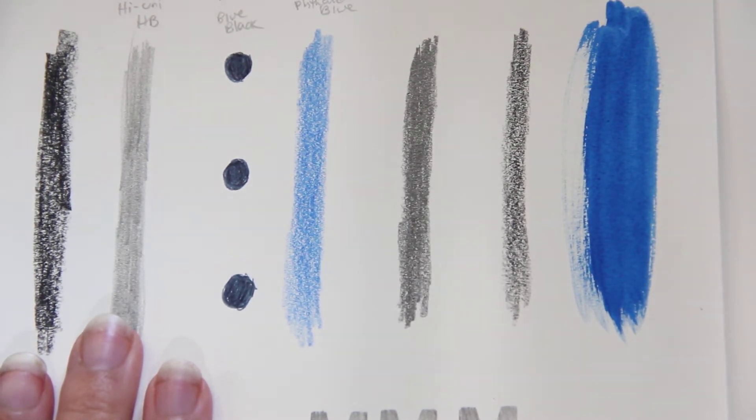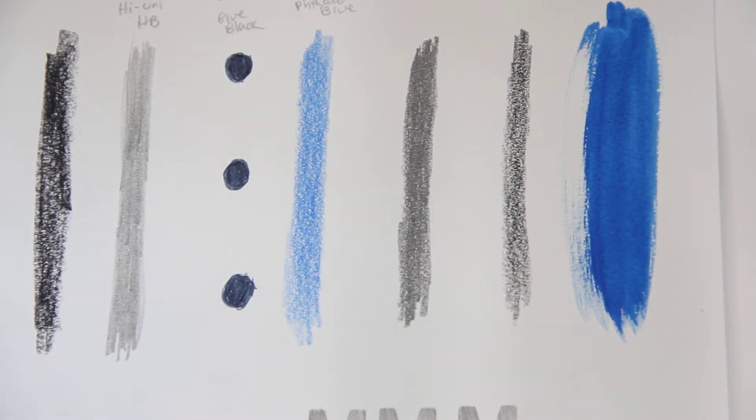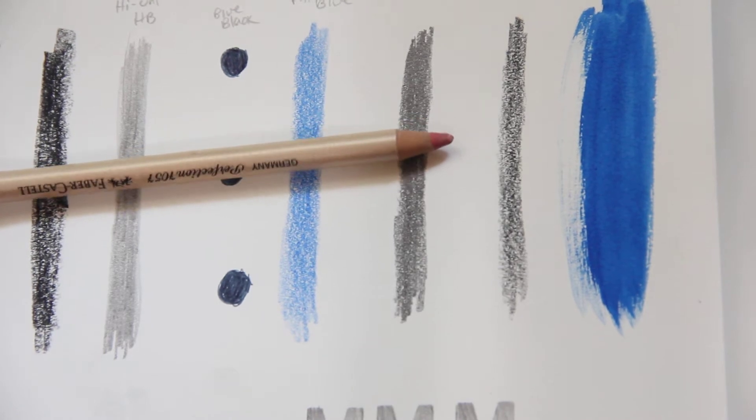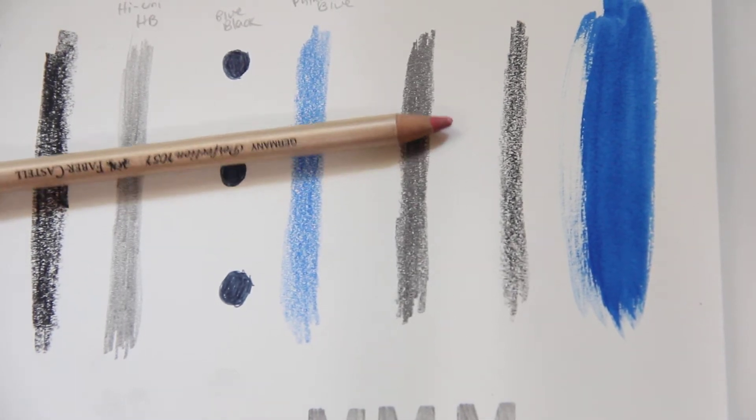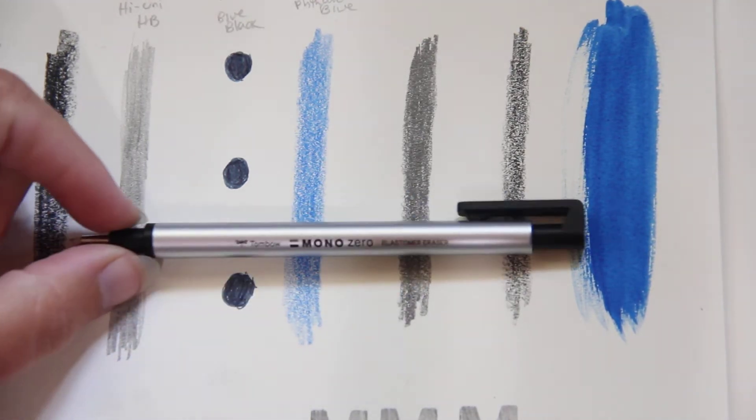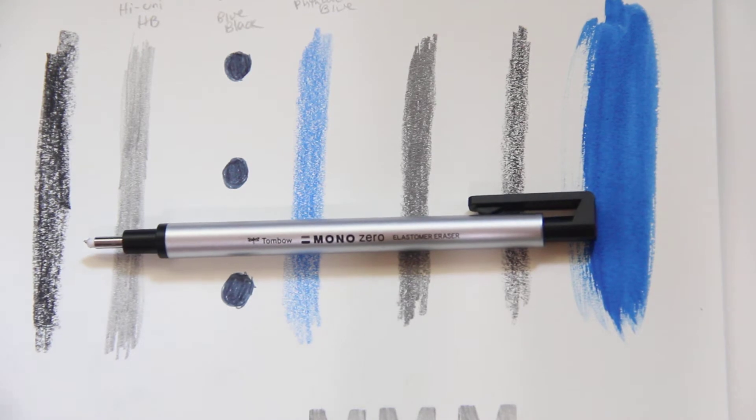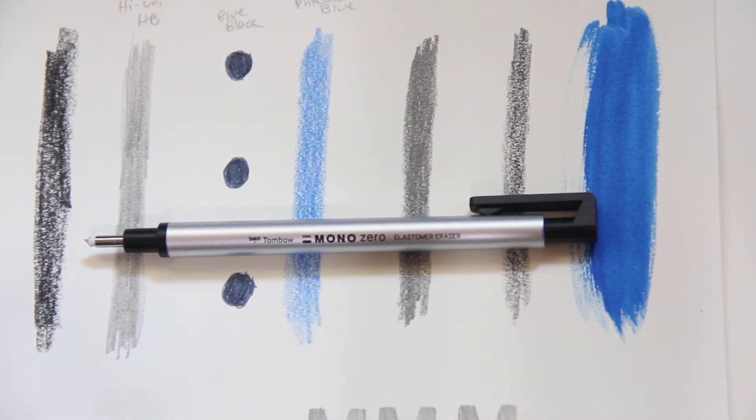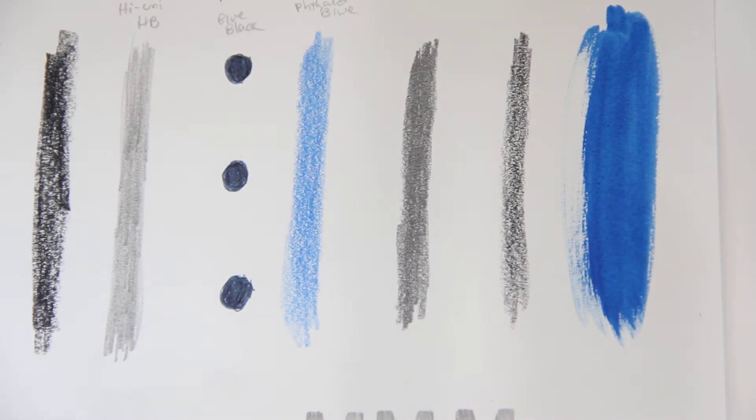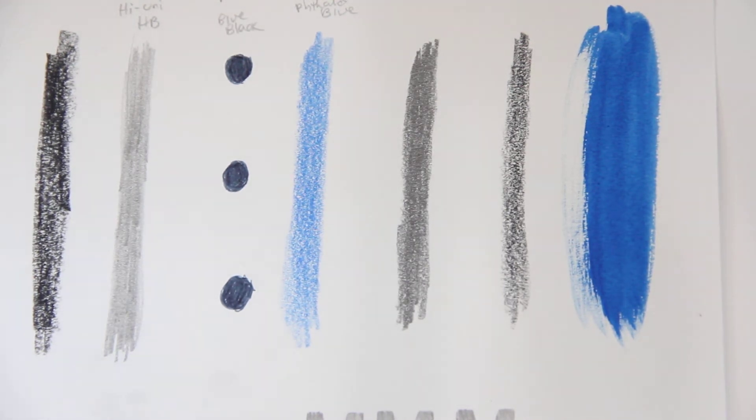So I have the Faber Castell pencil eraser which is good for teeny tiny erasing, and I have the Tombow mono zero in 2.3 millimeters. I wanted to test them side by side and then I wanted to do just sort of a control.